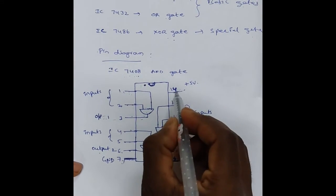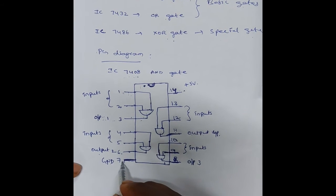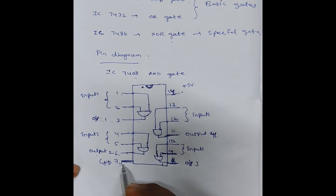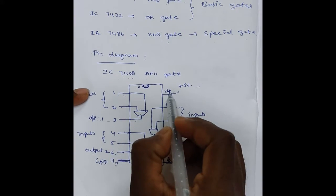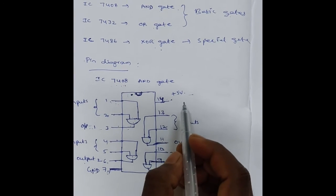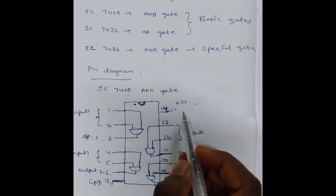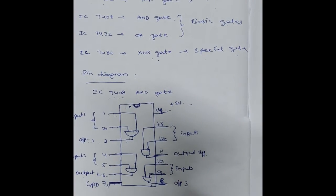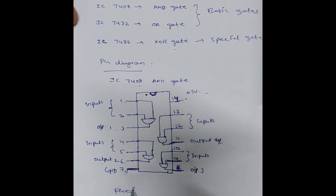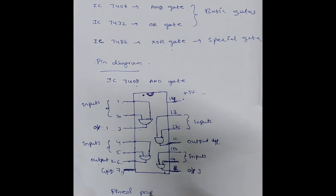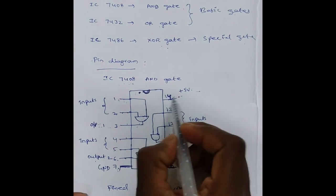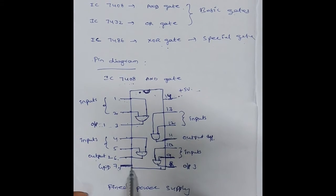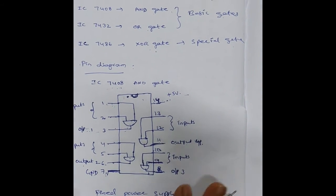Pin 7 and pin 14: you have to supply ground to pin 7 and power supply to pin 14. In our lab we have a fixed power supply. From the fixed power supply, you have to give 5 volts to the 14th pin of the IC and ground to the 7th pin of the IC.